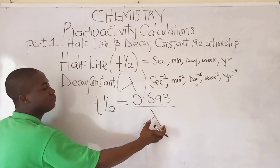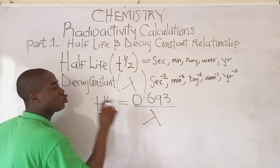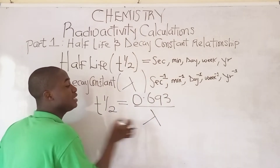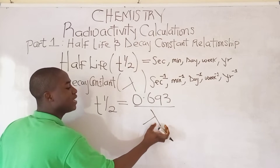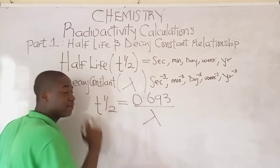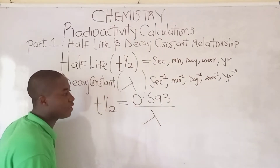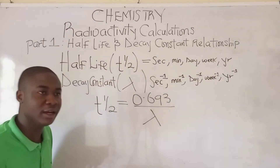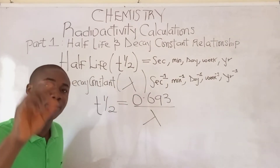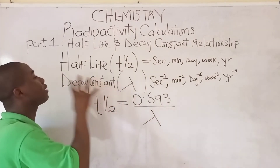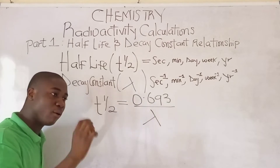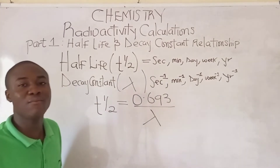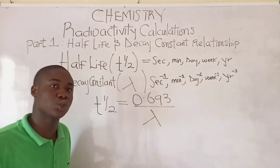Recall that the decay constant SI unit is gotten from the SI unit for the half-life, so to get the SI unit for the decay constant it is a function of the half-life. This formula — T-half equals 0.693 over decay constant — is very important when solving problems under radioactivity. Let's quickly move over to question 1 and apply the formula.